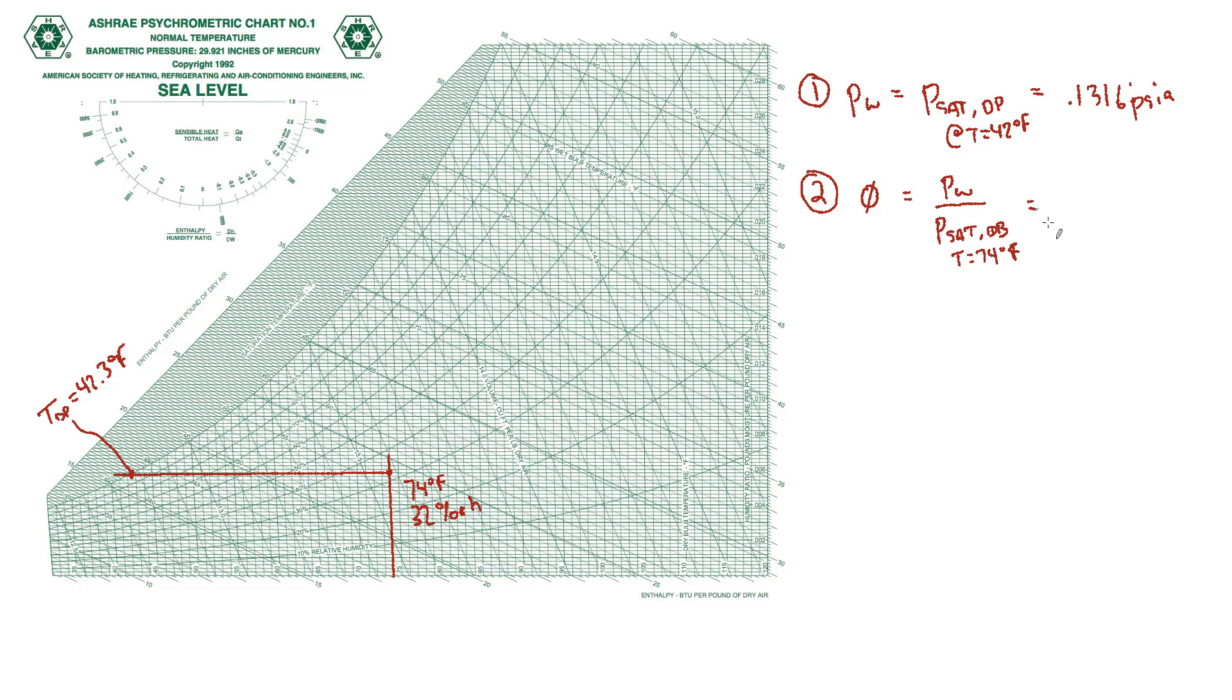So this is a little different approach. This is like saying, we're going to go up vertically from our state point until we hit the saturation curve, and ask the question, what is the saturation pressure at that point? That's a number we can look up in the steam table as well.